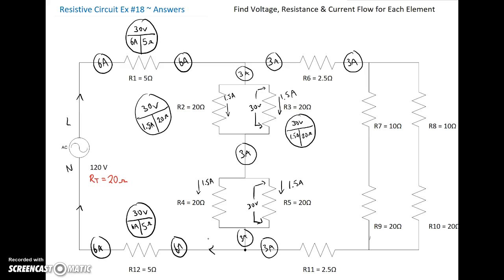Excellent. Now we've found everything for R1, R2, R3, R4, R5, and R12. Now we've got to follow the current again. We've got 3 amps through R6, and R6 is 2.5 ohms — so 3 times 2.5 gives us 7.5 volts. This one down here, R11, is exactly the same: 3 amps, 2.5 ohms, 7.5 volts.